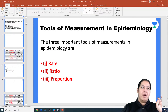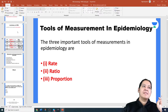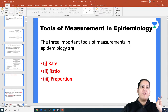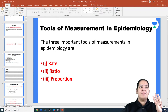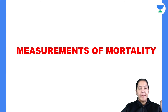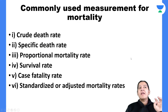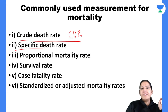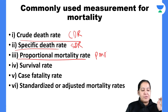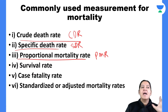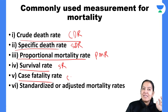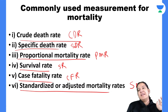We are continuing the measures of mortality. There are six measures in total. We have already covered three. The first three are: Crude Death Rate (CDR), Specific Death Rate (SDR), and Proportional Mortality Rate (PMR). Today I will first revise these three and their formulas, then cover Survival Rate, Case Fatality Rate, and Standardized Mortality Rate (SMR).